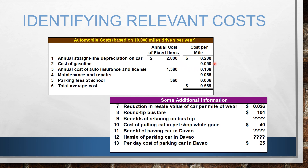The cost of gasoline was calculated by dividing 1.6 by 32 miles per gallon. The depreciation uses a 5-year useful life and 4,000 residual value. Additional information includes: round-trip bus ticket, reduction in resale value of the car per mile driven, benefits of relaxing on the trip, cost of putting the cat in the pet shop while gone, benefits of having a car in Davao, hassle of parking, and per-day parking cost.